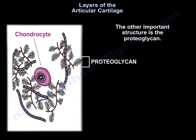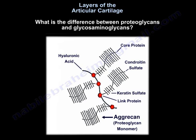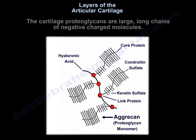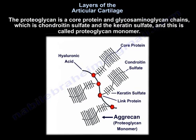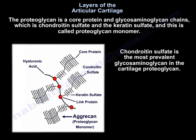The other important structure is the proteoglycan. What is the difference between proteoglycans and glycosaminoglycans? The cartilage proteoglycans are large, long chains of negatively charged molecules. The glycosaminoglycans are linear polysaccharides, such as keratan sulfate and chondroitin sulfate. So the proteoglycan is a core protein with glycosaminoglycan chains — chondroitin sulfate and keratan sulfate — and that is called a proteoglycan monomer. Chondroitin sulfate is the most prevalent glycosaminoglycan in cartilage proteoglycan.